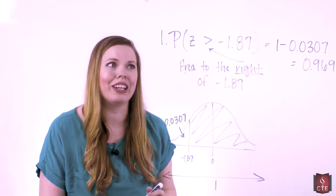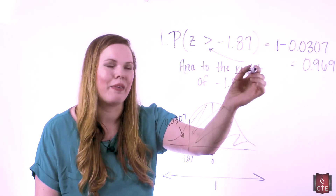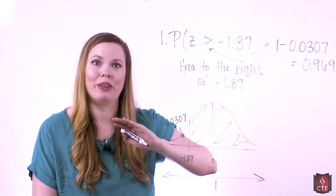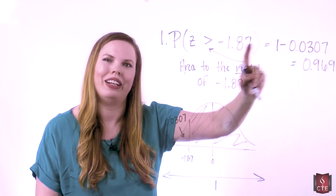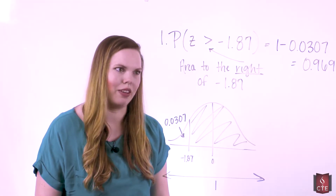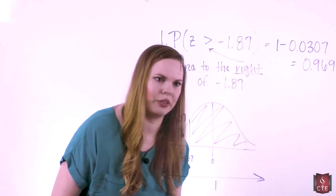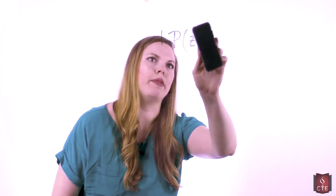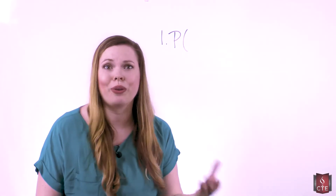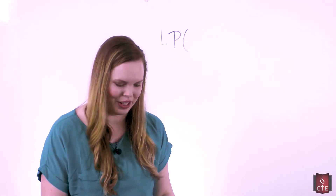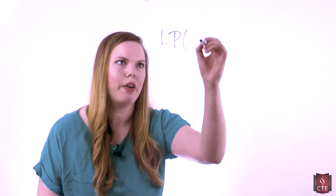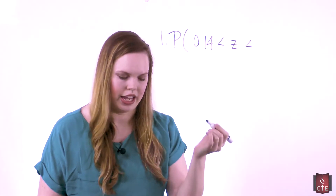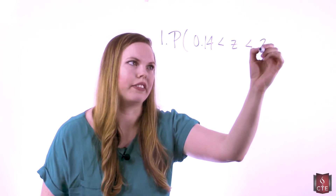When we have a greater than symbol and want the area to the right, the only difference from the previous problem is that we added 1 minus to handle that. Now let's do one more problem with the standard normal curve: finding the probability that a z value is between two values — between .14 and 2.76.